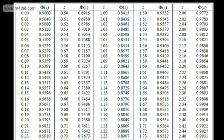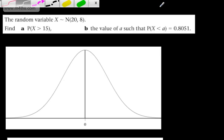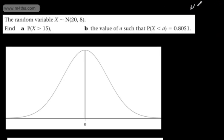Now we're told the random variable X has a normal distribution with mean 20 and variance 8. That means sigma, the standard deviation, is the square root of 8, or 2 root 2. We want to find the probability that X is greater than 15. Making the substitution, we get 15 minus 20 divided by root 8.